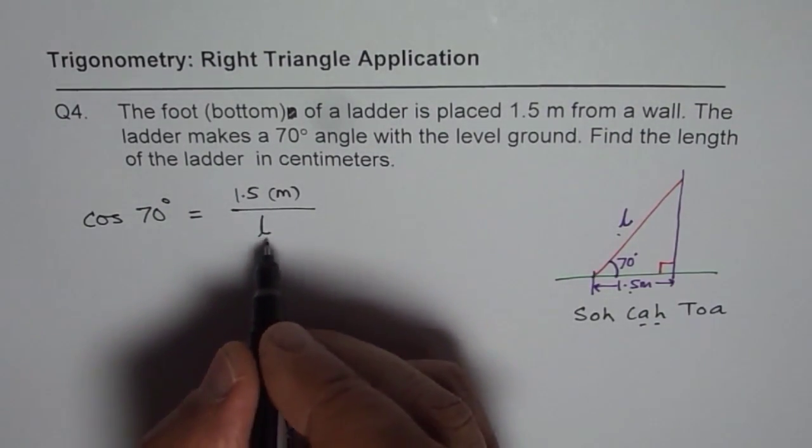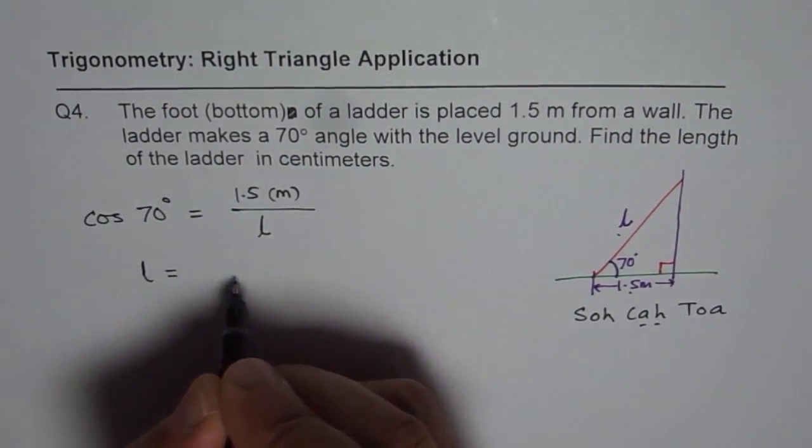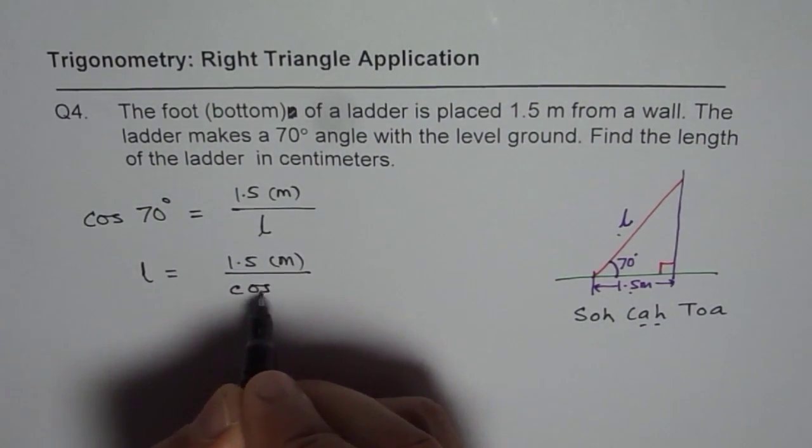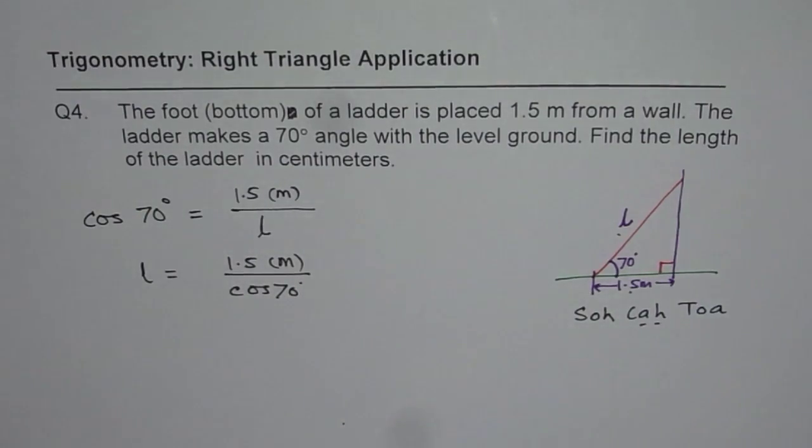And L. Cross multiply. So L is equal to 1.5 meters divided by cos of 70 degrees. Use calculator.